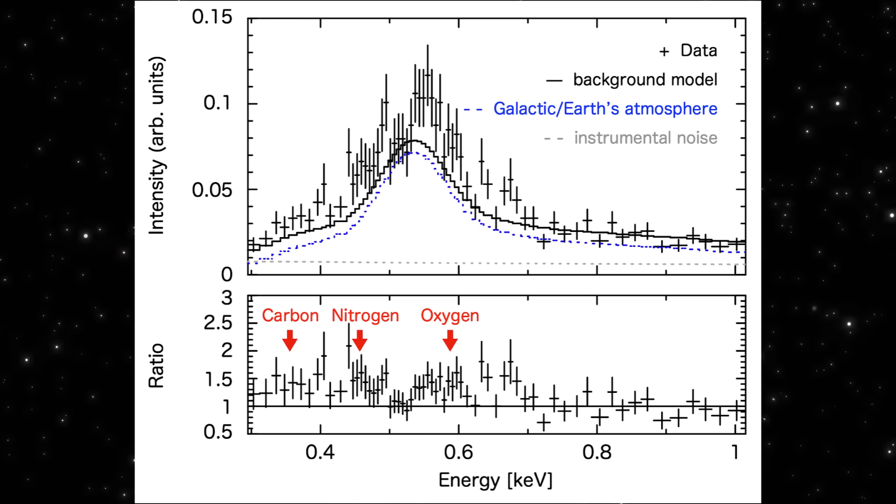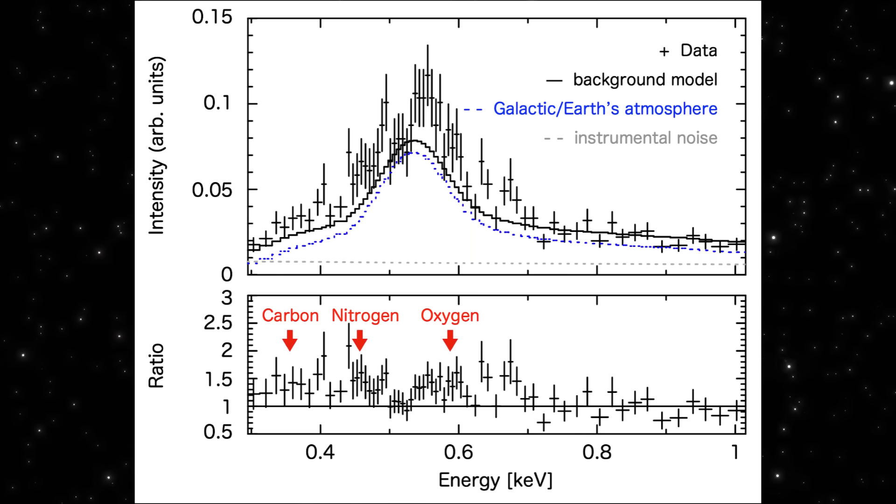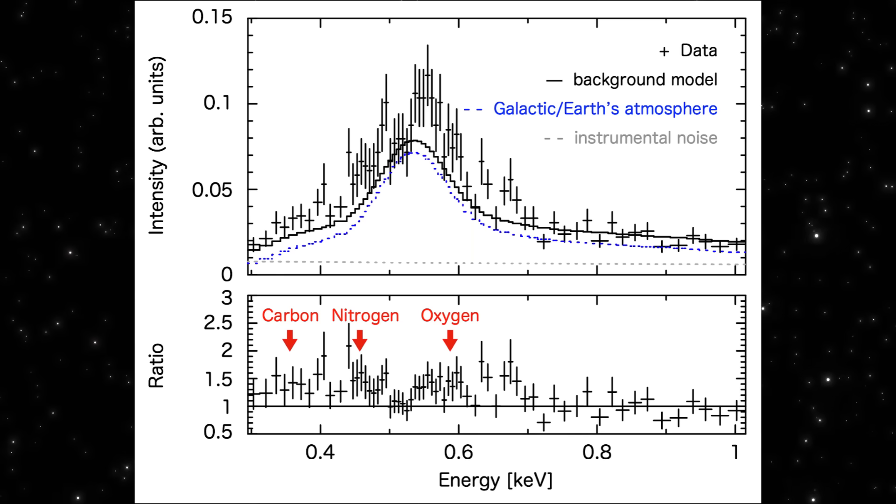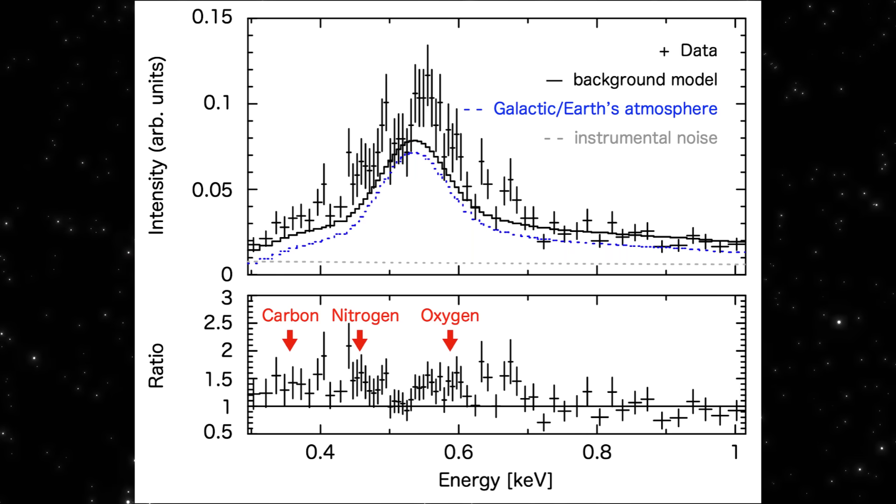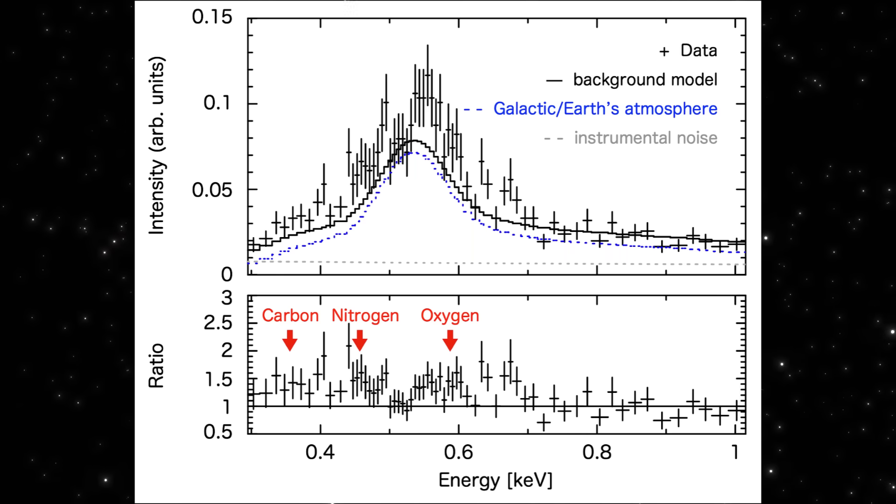Those peaks line up almost perfectly with the energies of carbon, nitrogen, and oxygen. That means the comet isn't just glowing. It's emitting X-rays in a pattern tied to real atomic processes.